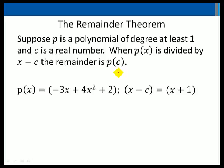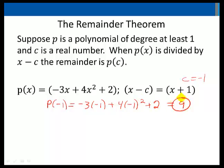Let's use the remainder theorem to find our remainder when P of x is divided by x minus C with P of x being equal to negative 3x plus 4x squared plus 2 and x minus C being equal to x plus 1. Here C equals negative 1. So to find the remainder we'll find P of negative 1 which will be negative 3 times negative 1 plus 4 times negative 1 squared plus 2. And this is equal to 9 meaning that we have a remainder of 9. We used this same problem earlier with synthetic division and had the same result a remainder of 9.